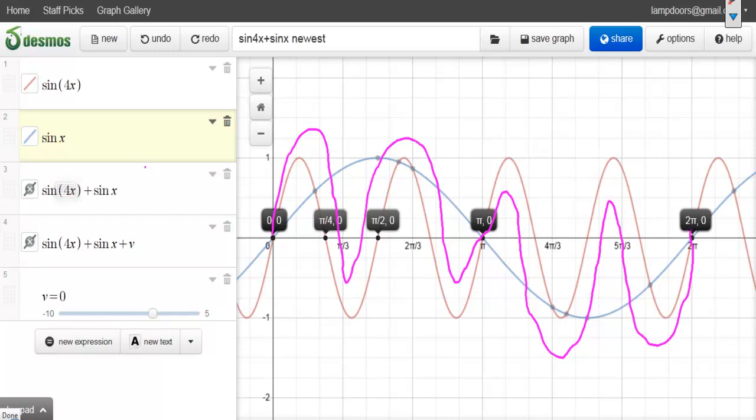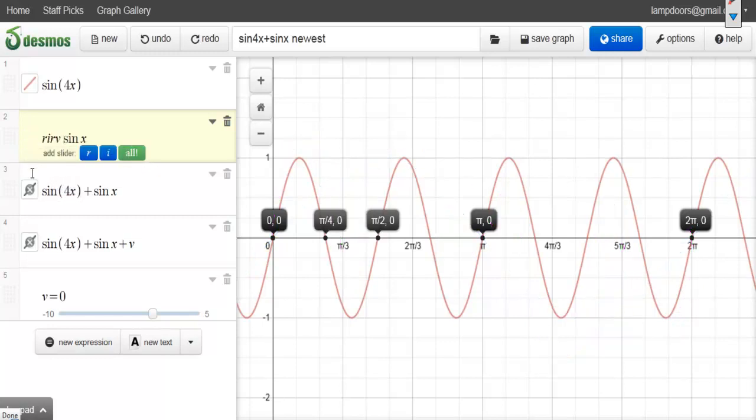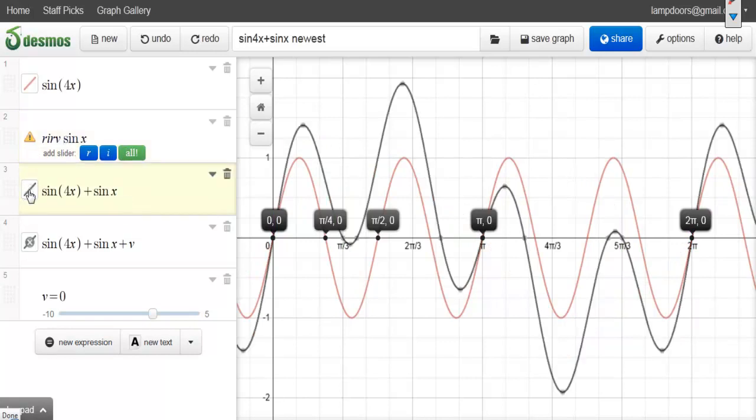But then let me turn on the actual graph. And you'll see it's not exactly the same, but we got a rough sketch by just going above it between 0 and pi, and below it between pi and 2 pi.